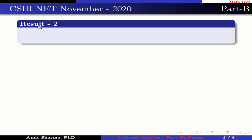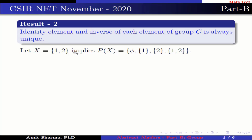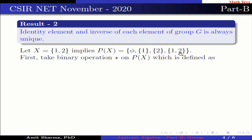Result number two: the identity element and inverse of each element of a group G are always unique. Let X equal {1, 2}, which implies P(X) contains the elements: empty set, {1}, {2}, and {1, 2}. Now take the binary operation star on P(X), defined as: for A, B belonging to P(X), A star B equals A intersection B.